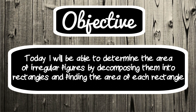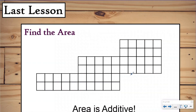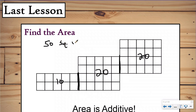This is very similar to what we did last lesson, except today our rectangles won't be covered with unit squares — we're just going to use the given dimensions. Last lesson we learned that area was additive. We split this irregular figure into different rectangles, found the area of each — 20, 20, and 10 — and added those together to find the total area of 50 square units.